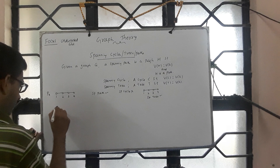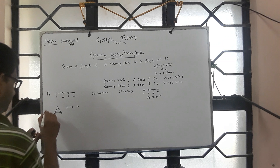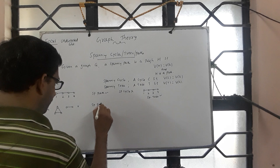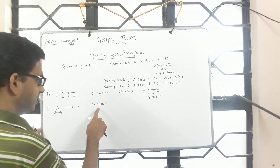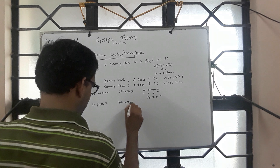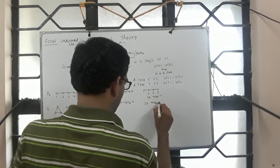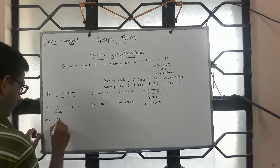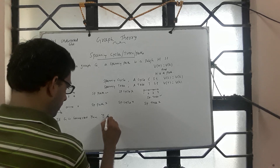Suppose the graph is disconnected. When a graph is disconnected, we cannot find a spanning path, because by definition a path is a sequence of vertices and edges and must be connected. Similarly, a spanning cycle must be connected, and a spanning tree by definition also requires connectedness. So if G is disconnected, spanning tree is also unknown. If G is connected, then there exists a spanning tree.